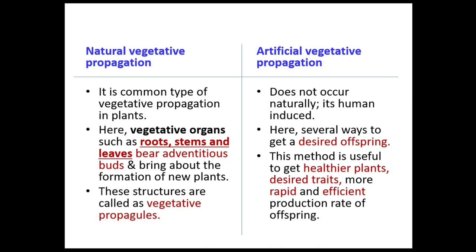In natural vegetative propagation, the plant must produce flowers with viable male and female sex organs, transfer pollen, germinate the pollen tube, fertilize the egg, produce fruit, mature, disperse seeds, and then germinate into seedlings — a very long process. But in artificial vegetative propagation it's quick. For example, you can cut one twig of a hibiscus plant and within two to three months get a flower.